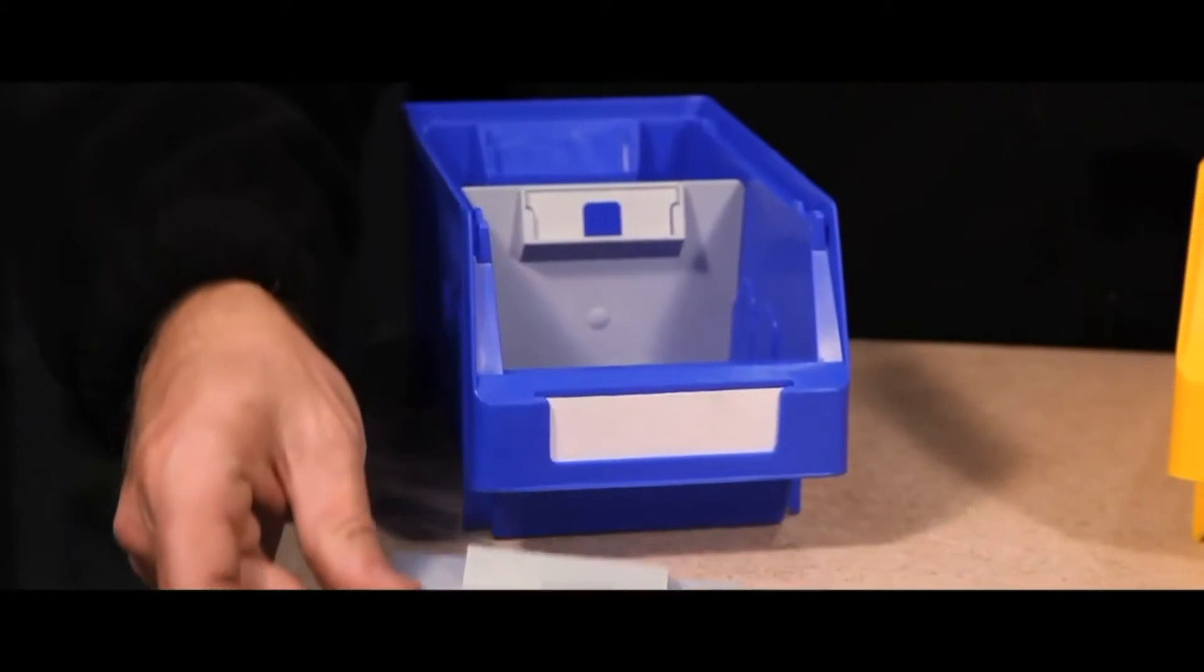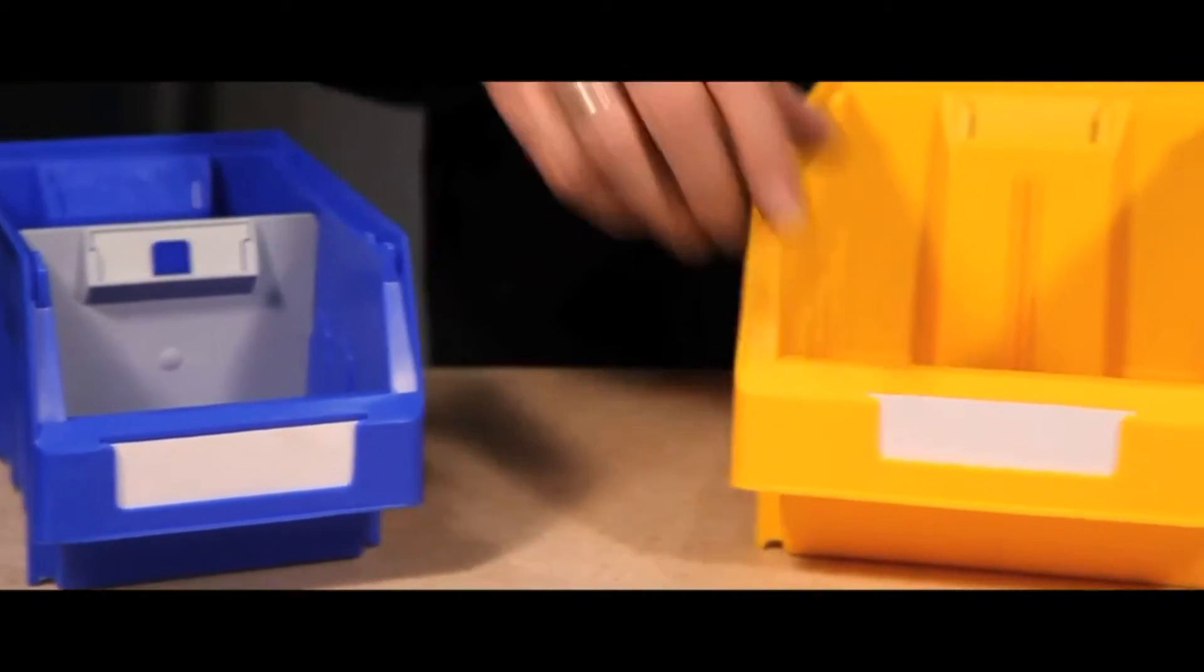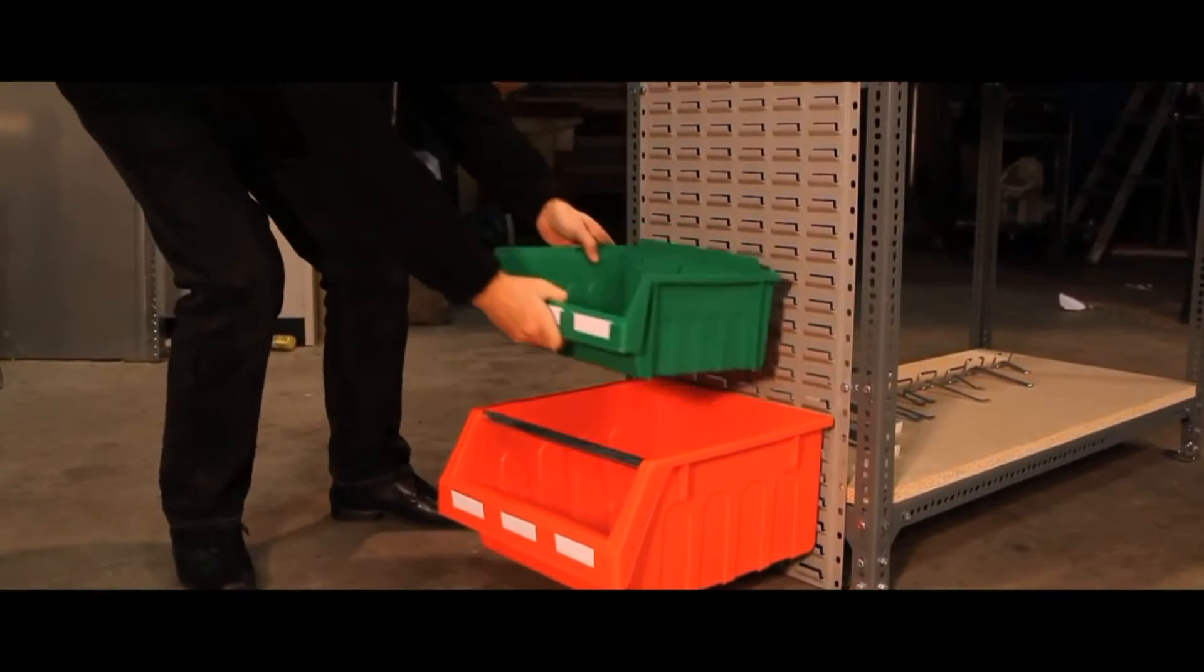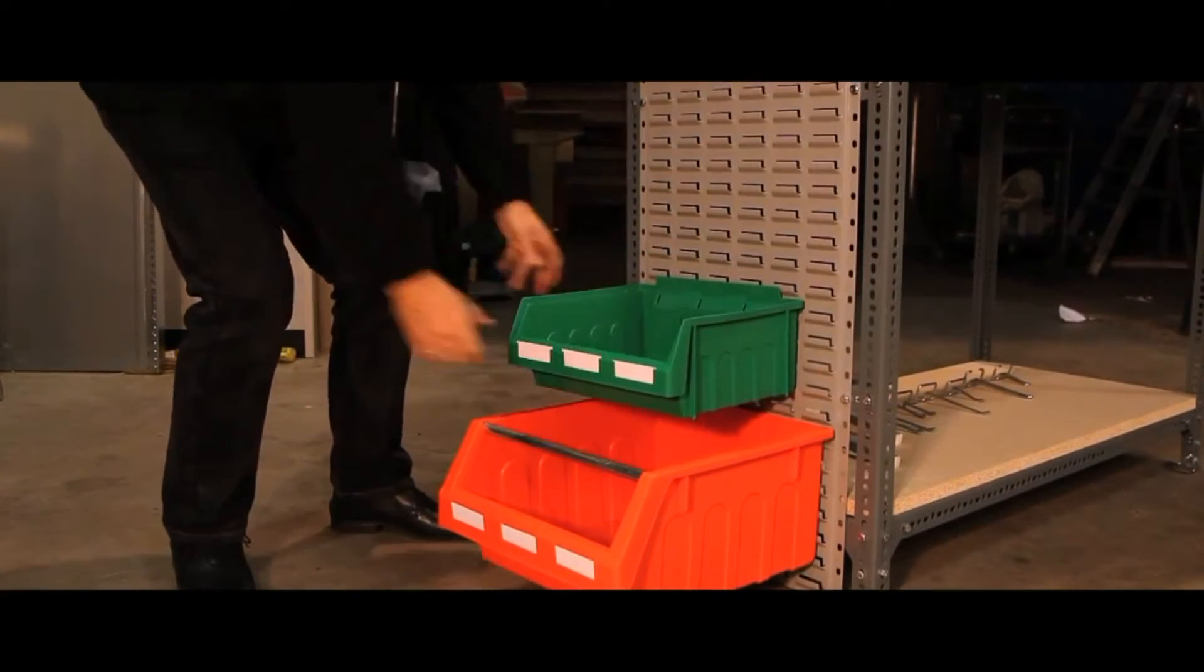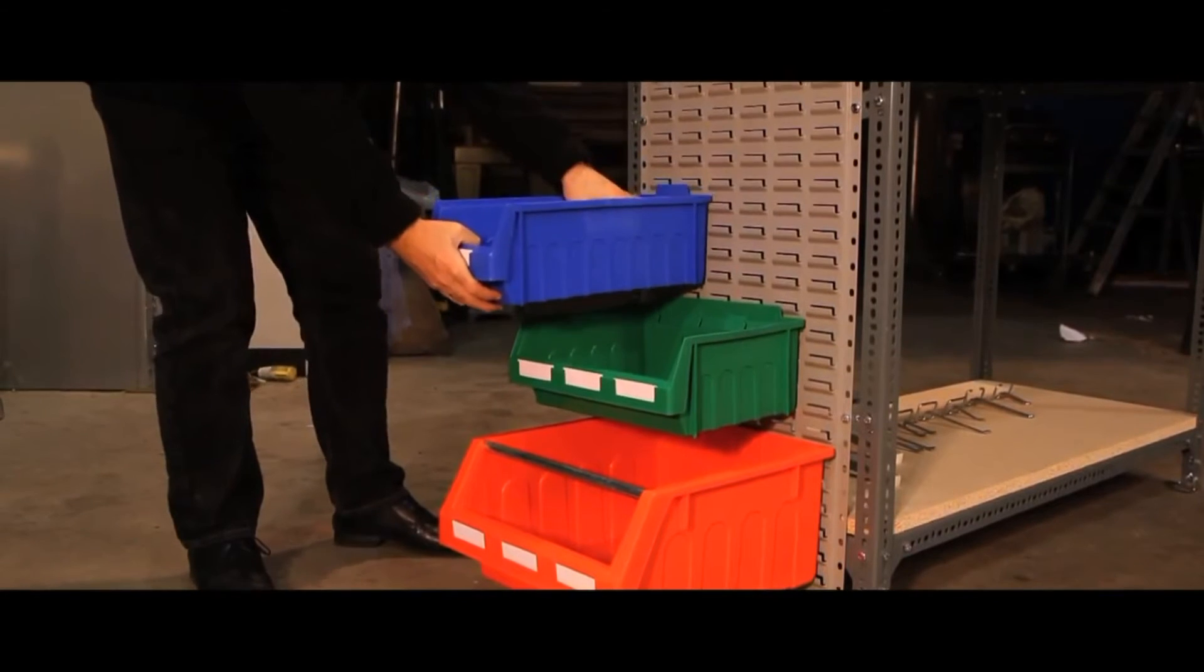When used with the Dexian H1280 adjustable shelving system, the Maxi Bins create an excellent small parts storage solution. The bins slide effortlessly on the pre-galvanised shelves. The raised lip to the rear of the Maxi Bin allows access to all the items in the bin.